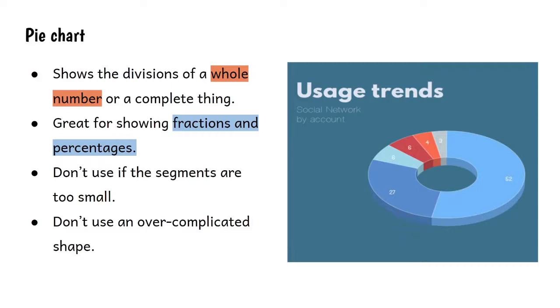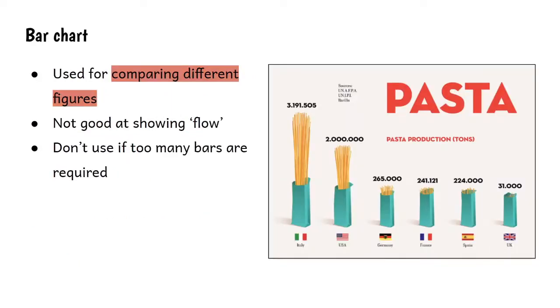But you have to be cautious because if the segments in a pie chart get too small, then it becomes unreadable and ends up being a little bit ugly to look at. Also, the shape that you're choosing - you're better to keep that simple. Don't use an over-complicated shape. Because the primary use of an infographic is to present data, you should keep your shape nice and simple.